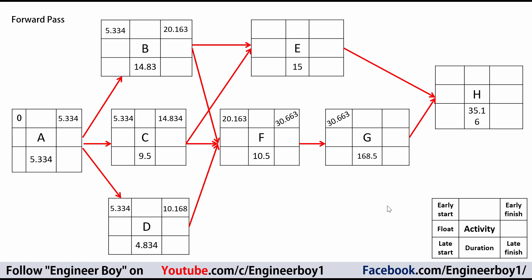The early finish of F (30.663) is forwarded to G as its early start; adding G's duration gives G's early finish. For activity E, which has two predecessors (B and C), we take the maximum early finish — again from activity B — and add E's duration of 15, giving early finish = 35.163. For activity H, which has two predecessors, we take the maximum, which is G's early finish at 199.163, and add H's duration to get H's early finish.